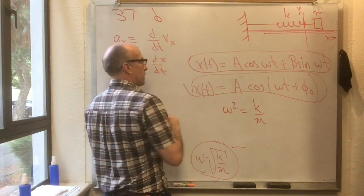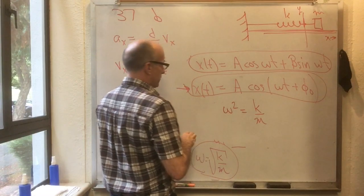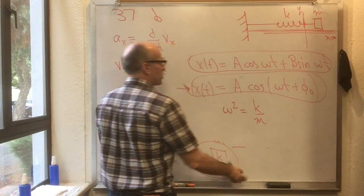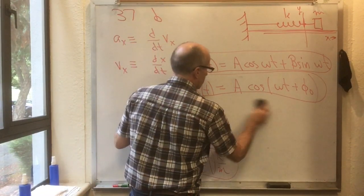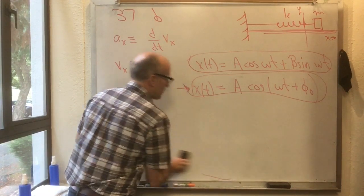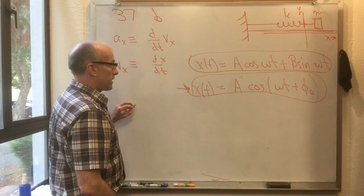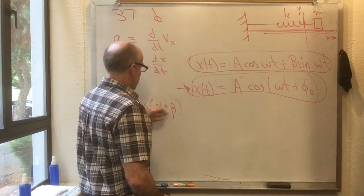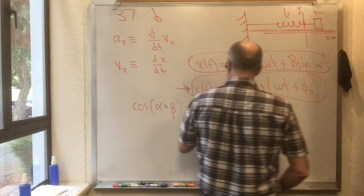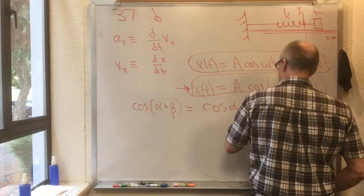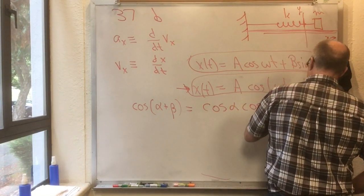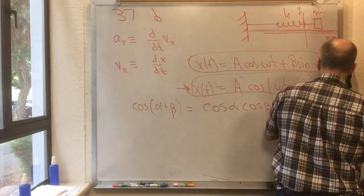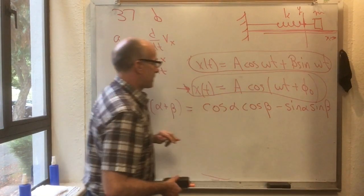This one, which is a very popular way of writing the most general guess. This one is actually redundant. Why? Because there's a trig identity that says that cosine of alpha plus beta is equal to cos alpha cos beta minus sine alpha sine beta.